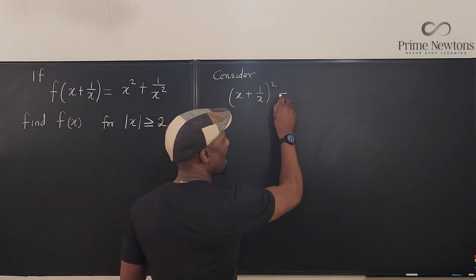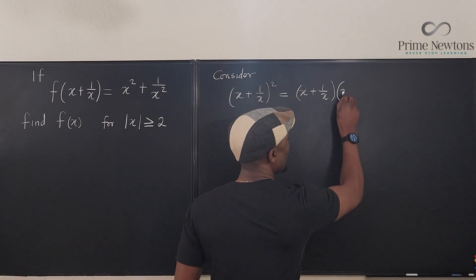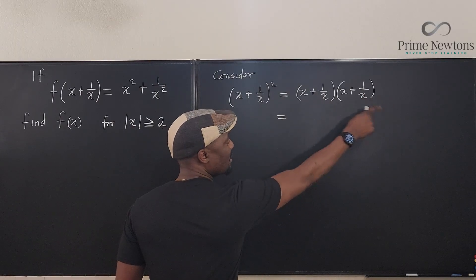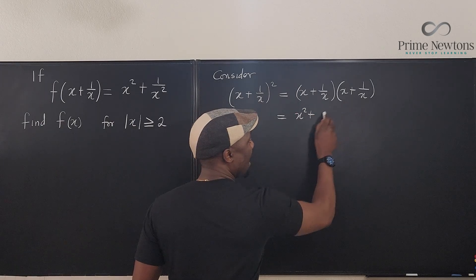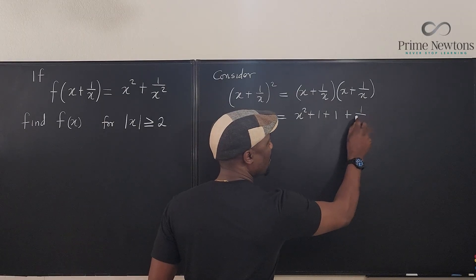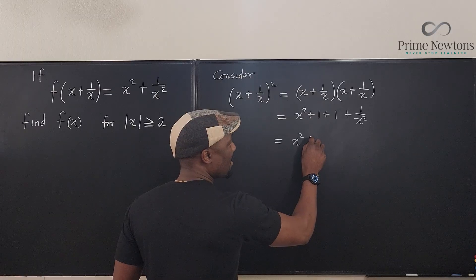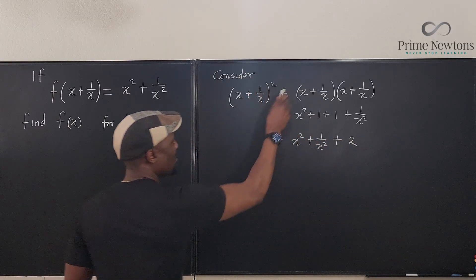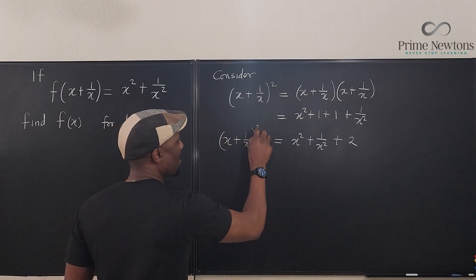This is the same thing as x plus 1 over x times x plus 1 over x. You notice that if I distribute this, I'm going to end up with x squared plus x times 1 over x is 1. This times this is 1, and this is 1 over x squared. So as you can see, I have x squared plus 1 over x squared plus 2. That's what I have on this side, x plus 1 over x all squared.